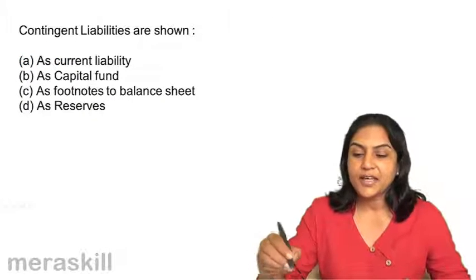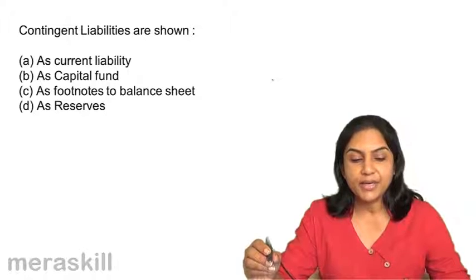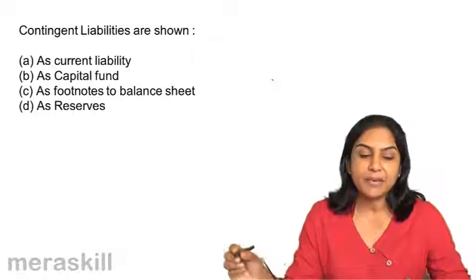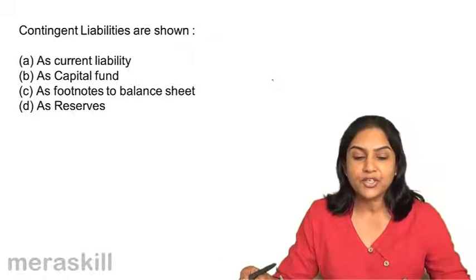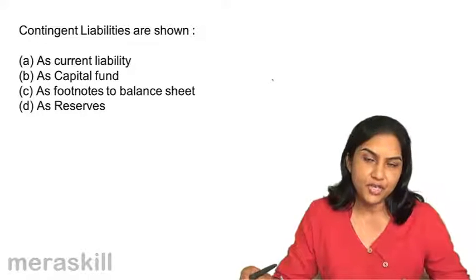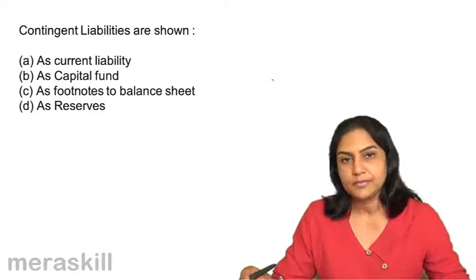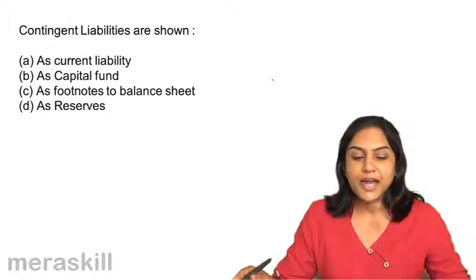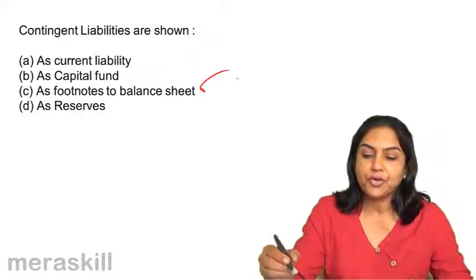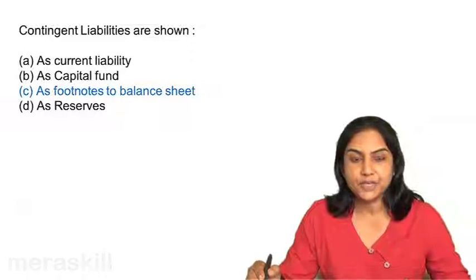Contingent liabilities are shown as: A. current liability, B. as capital fund, C. as footnote to balance sheet, and D. as reserves. Contingent liabilities are shown as footnotes to the balance sheet.